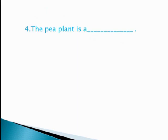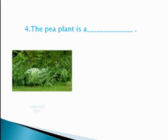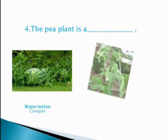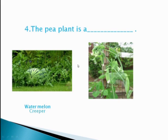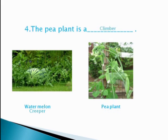Now dear students, blank number 4: the pea plant is a dash. In the first option we have watermelon, which grows on the ground just because of long weak stems. And in another option, here we have a pea plant. Can you see there is a stick over here? It means that a pea plant needs support to climb and grow. So what do we call those plants that need support to climb and grow? We call them climbers. The pea plant is a climber.